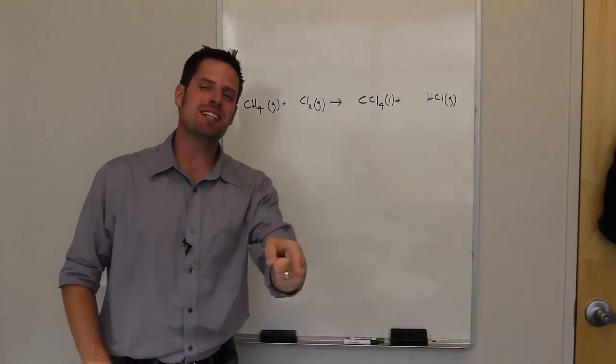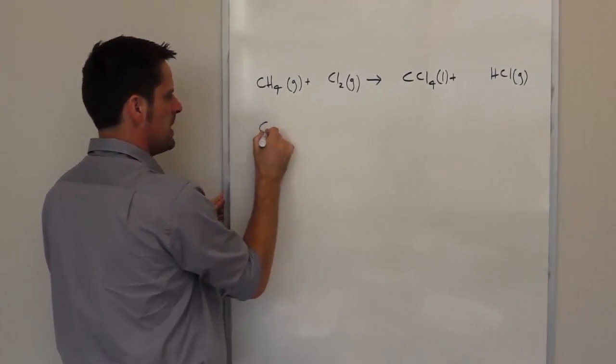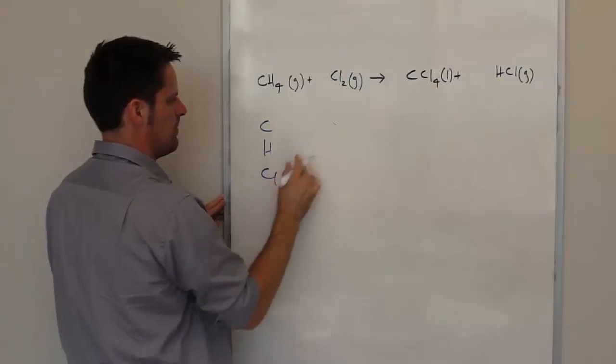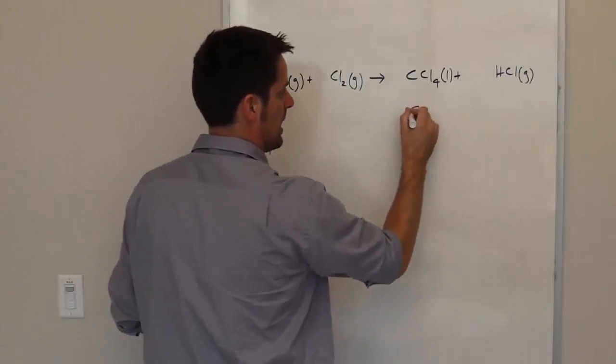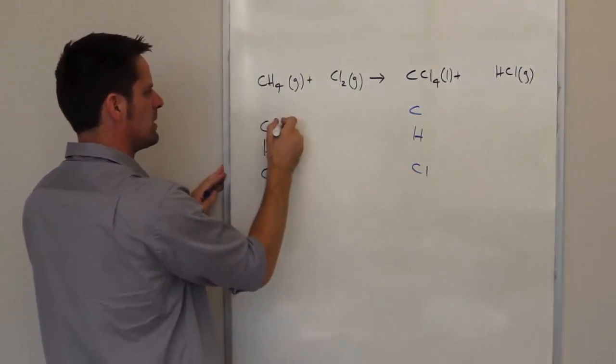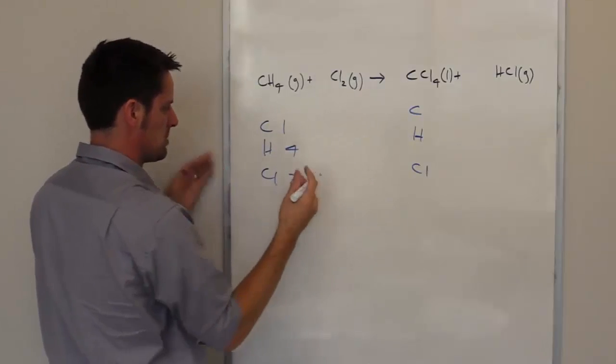For this one, we'll follow the same process as we did the last one. Looking at the left side of the equation, going left to right, I've got a carbon atom. I also have a hydrogen atom. And I keep moving over here, I've got a chlorine atom. Over here on the right, I've got a carbon atom. And presumably, I've got some hydrogens and chlorines. If we look over here, total, we can see we've got one carbon atom. We've got four hydrogen atoms and I've got two chlorine atoms.